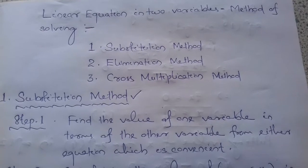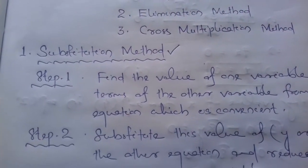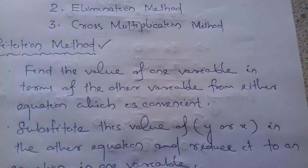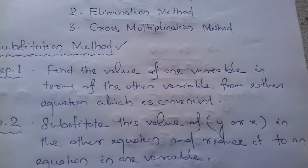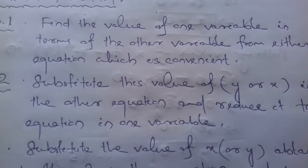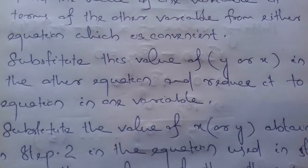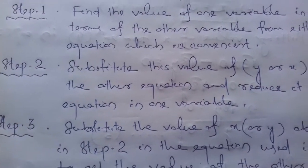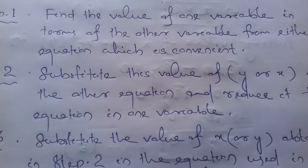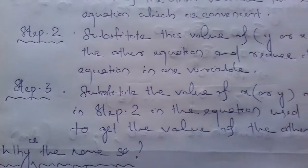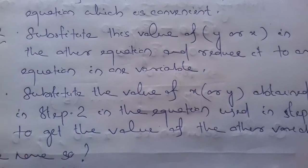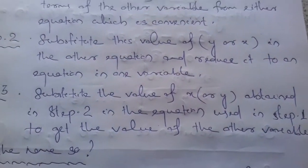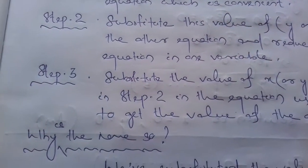Let's discuss today the substitution method. Step one: find the value of one variable in terms of the other variable from either equation, whichever is convenient. Step two: substitute this value of y or x in the other equation and reduce it to an equation in one variable. Step three: substitute the value of x or y obtained in step two in the equation used in step one to get the value of the other variable.